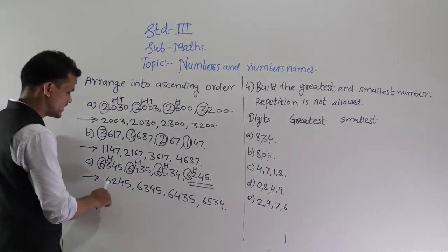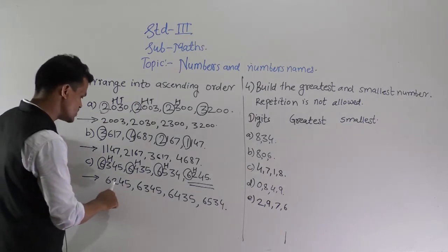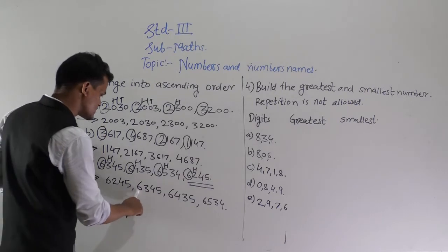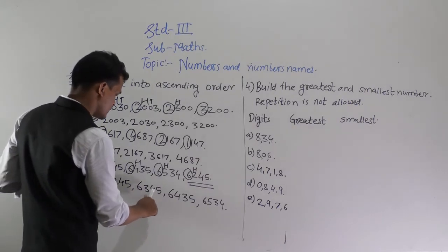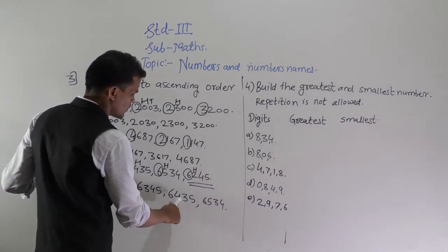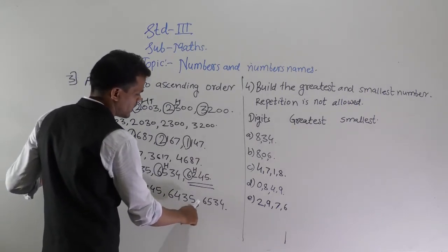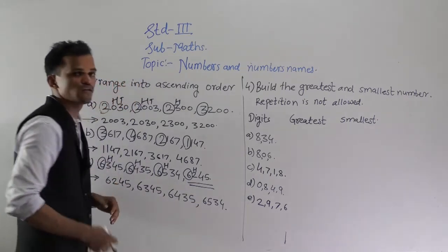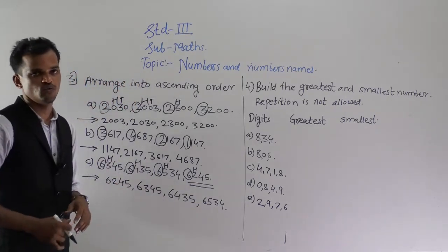Reading the ascending order again: 6245, 6345, 6435, and 6534.